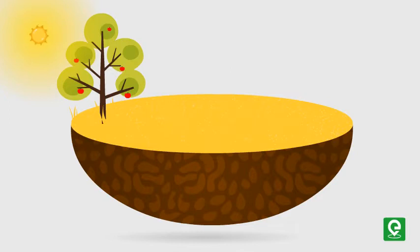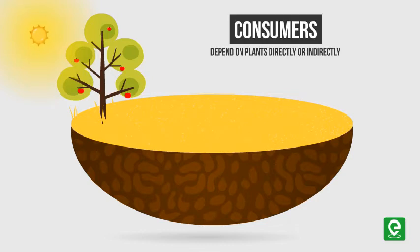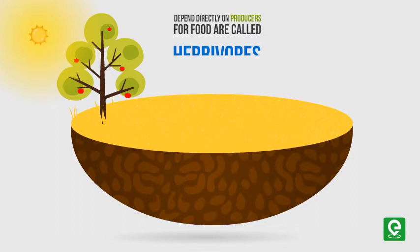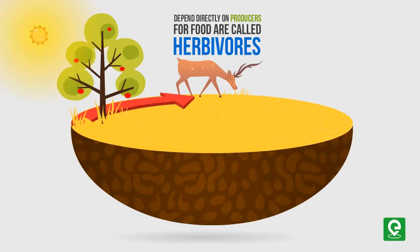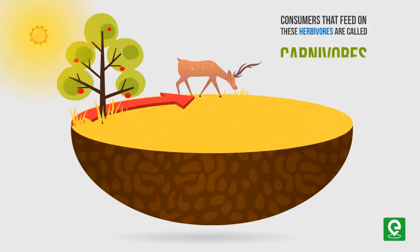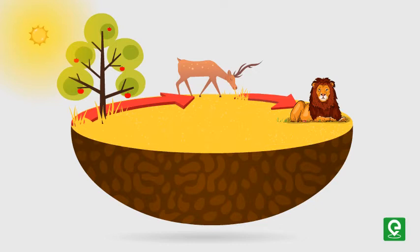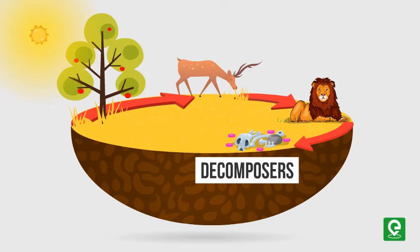Let's learn about the functional aspects of an ecosystem. The green plants in the ecosystem are known as producers because they synthesize food. Those animals which depend directly on producers for food are called herbivores, or plant-eating animals — they include birds, deer, and cow. However, the consumers that feed on these herbivores are called carnivores, or meat-eating animals.